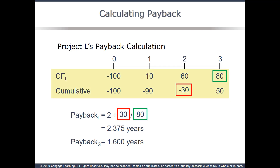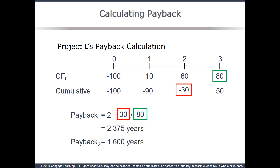Using Project L again: accumulate the cash flows from time zero to the last year, looking for when the sign of the accumulated cash flows changes from negative to positive. For Project L, the sign change occurs between years two and three. We assume cash flows are evenly spread throughout the year, so we find how far past year two we have to go to exactly pay back the initial investment. At the end of year two, we were still short $30, but by the end of year three we earned another $80. We find the fraction by dividing the last negative cumulative cash flow by the cash flow in the next year and taking the absolute value: absolute value of negative 30 divided by 80 equals 0.375. Add that to 2 and the payback is 2.375 years. Repeating the process for Project S results in a payback of 1.6 years.